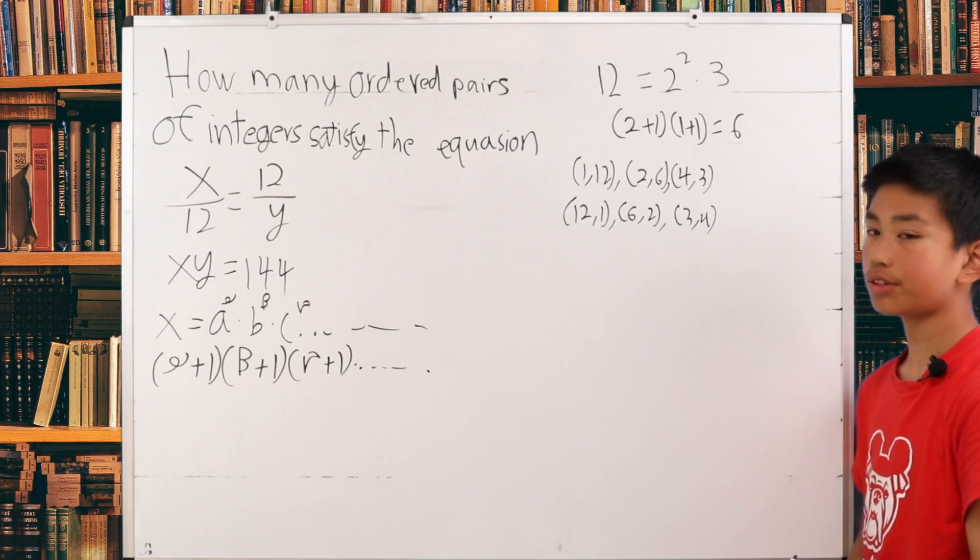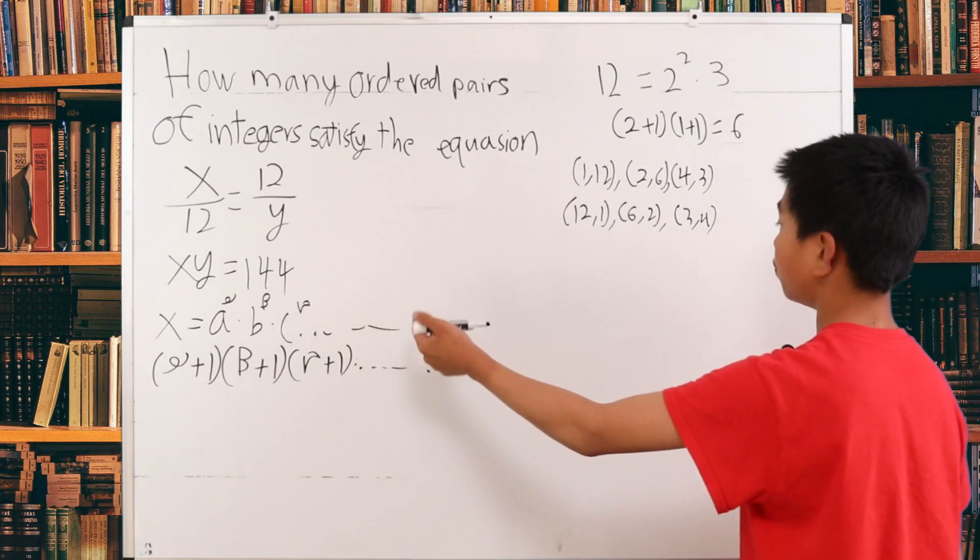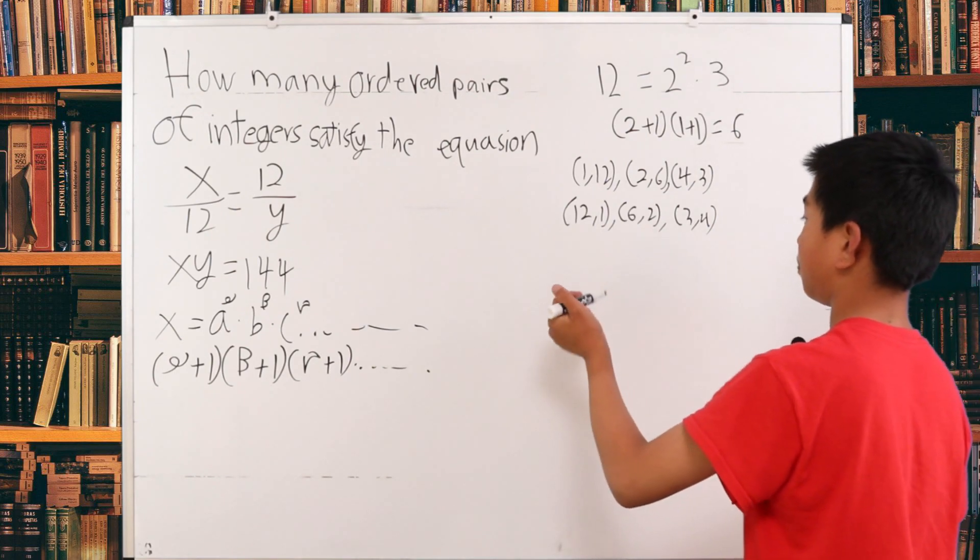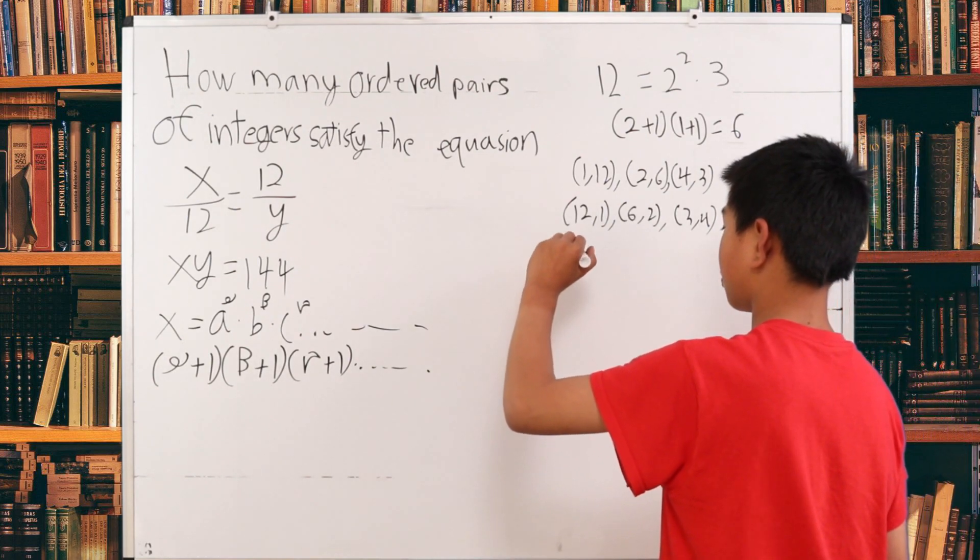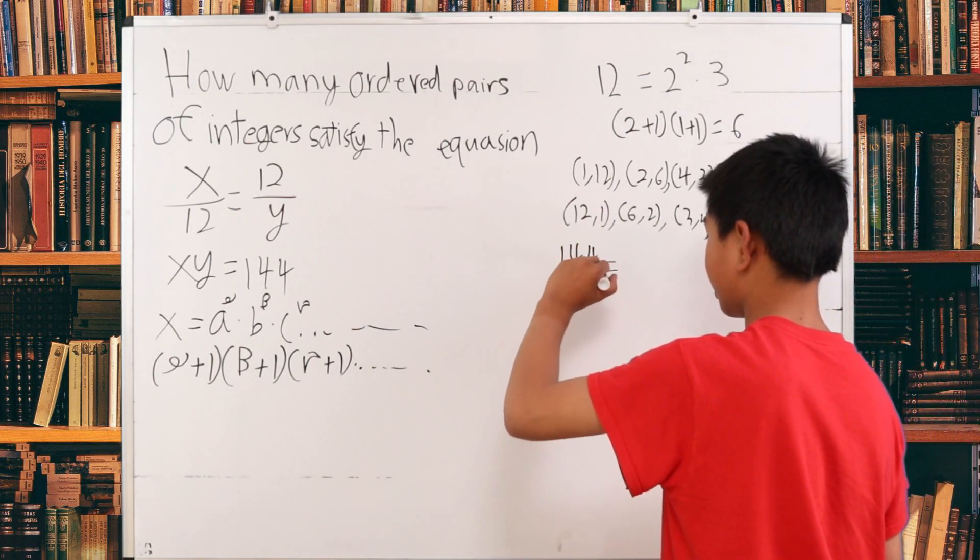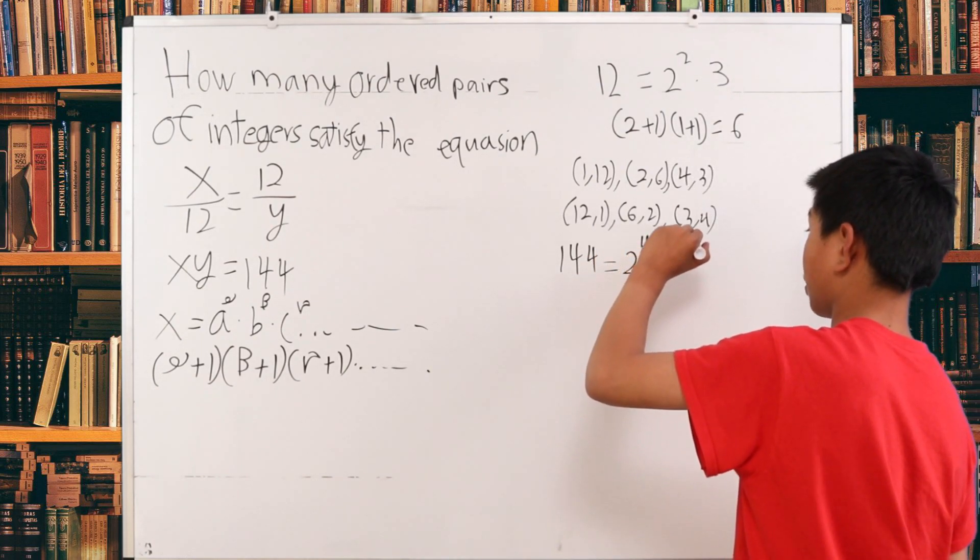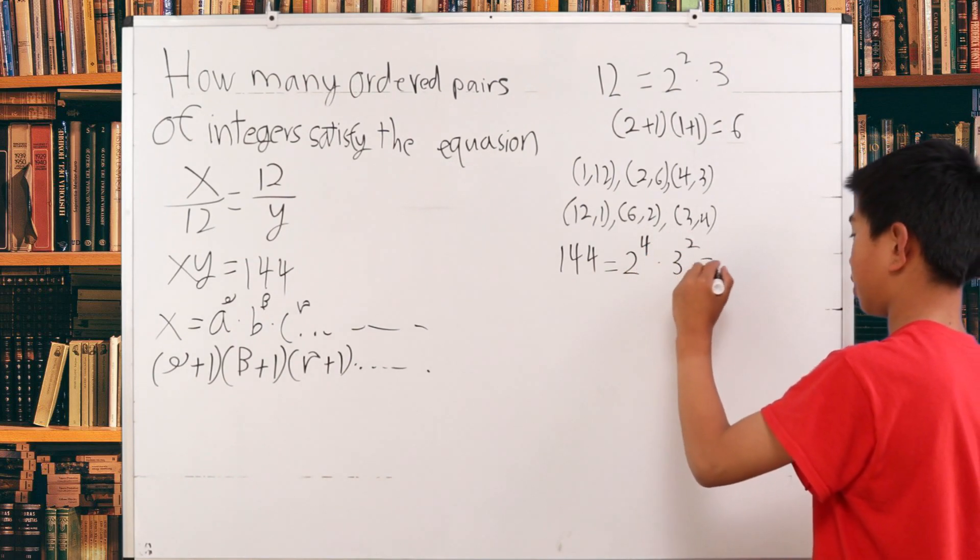So now we can use that strategy on 144. Once you break up 144, you get that it's 2 to the power of 4 times 3 squared. This is still xy.